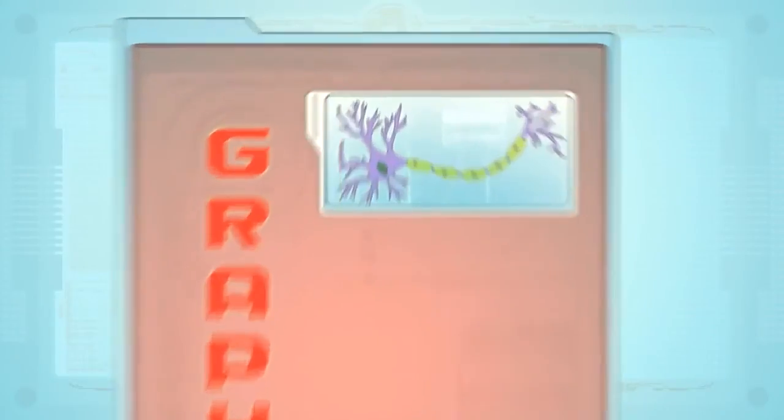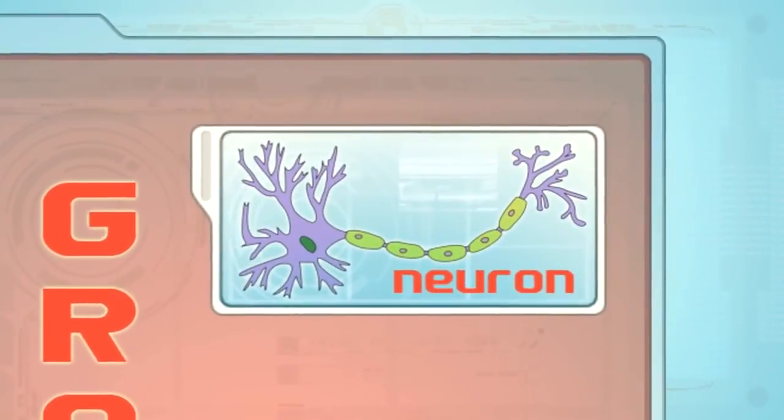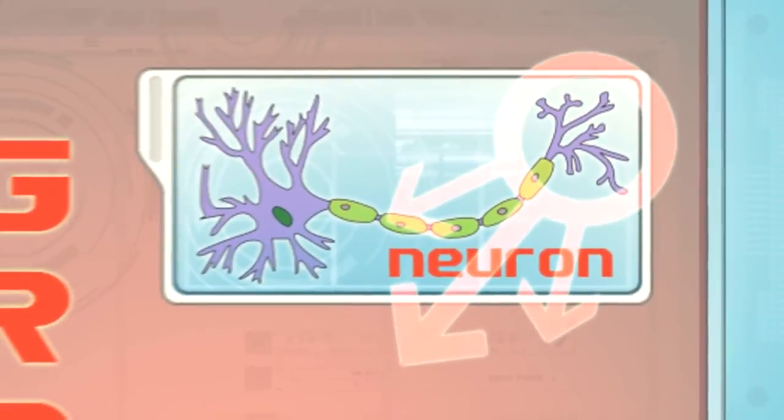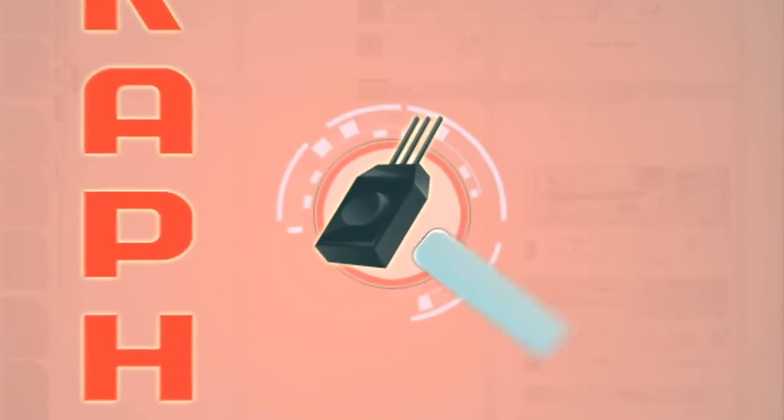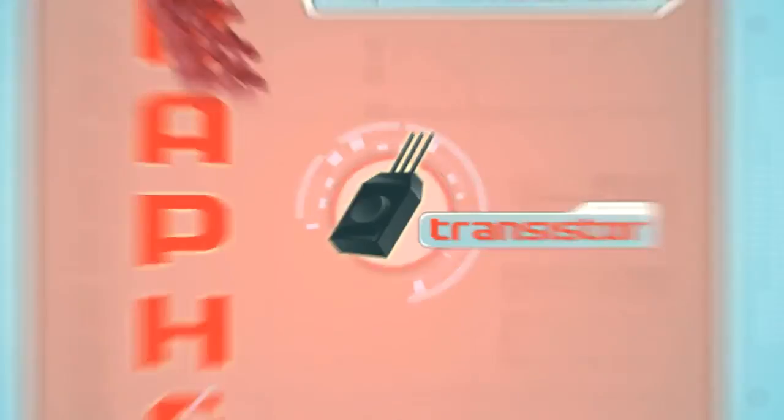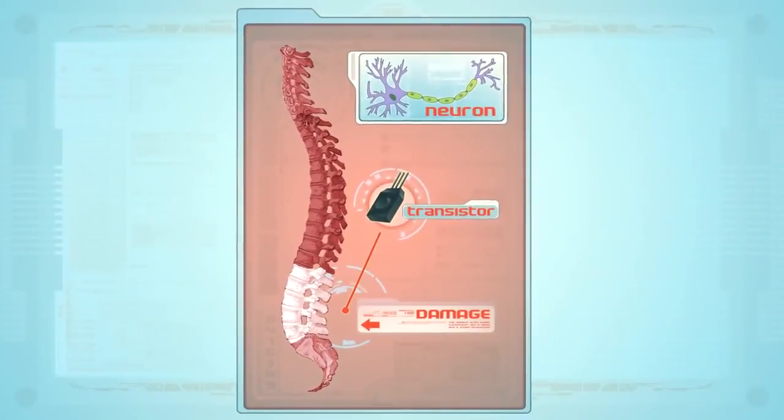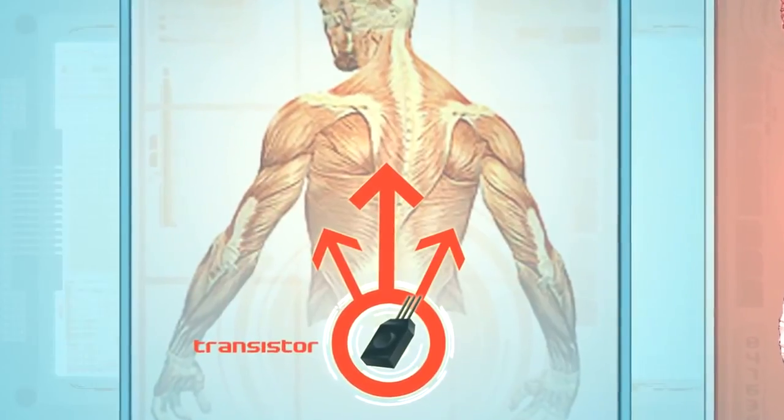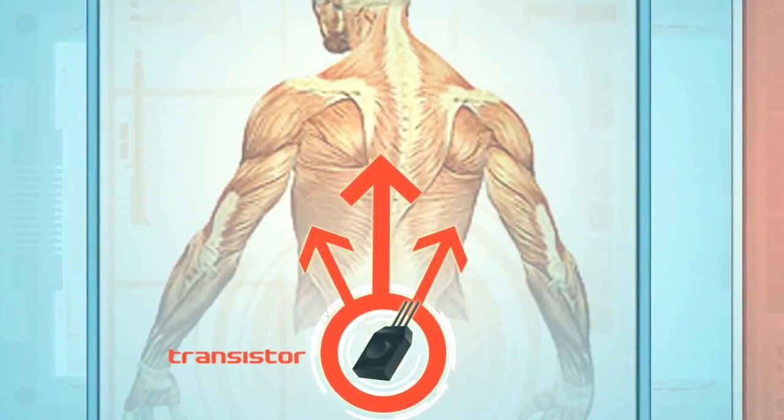Graphene conducts electrical signals, so it could be connected to neurons. Neurons are cells which send weak electrical signals from cell to cell in the body. Imagine lining transistors made of graphene along a damaged spinal cord. These strings of graphene could deliver nerve impulses from the undamaged section of the spinal cord past the damage and onto the nerves and muscles.